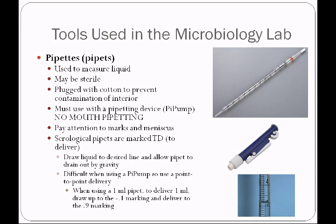A TD pipette delivers the fluid by gravity, which creates a problem when you have a pipette pump stuck on the end. To overcome this, we use something called a point-to-point delivery. If we want to deliver one tenth of a milliliter, for example, we would deliver from the 0.8 to the 0.9 mark. If we drew liquid up to the zero line and rolled it down with a pipette pump, we would actually get slightly more than one milliliter. To avoid this, these one milliliter pipettes have a minus 0.1 marking on them. If you draw up to the minus 0.1 and deliver down to 0.9, you've done a point-to-point delivery and have exactly one milliliter delivered. There will be one tenth of a milliliter roughly remaining in the pipette which you'll dispose of.